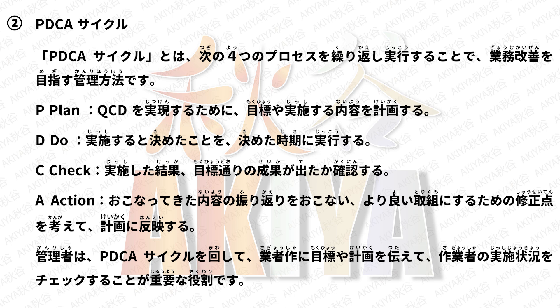PDCAサイクルとは、次の4つのプロセスを繰り返し実行することで業務改善を目指す管理方法です。P（Plan）: QCDを実現するために目標や実施する内容を計画する。D（Do）: 実施すると決めたことを決めた時期に実行する。C（Check）: 実施した結果、目標通りの成果が出たか確認する。A（Action）: 行ってきた内容の振り返りを行い、より良い取り組みにするための修正点を考えて計画に反映する。管理者はPDCAサイクルを回して作業者に目標や計画を伝え、作業者の実施状況をチェックすることが重要な役割です。